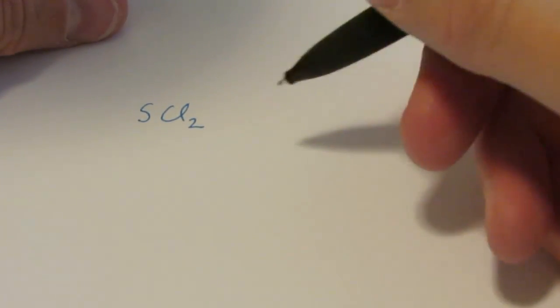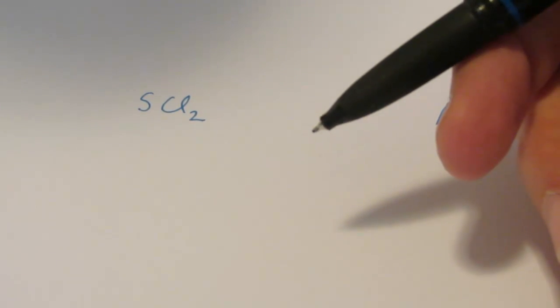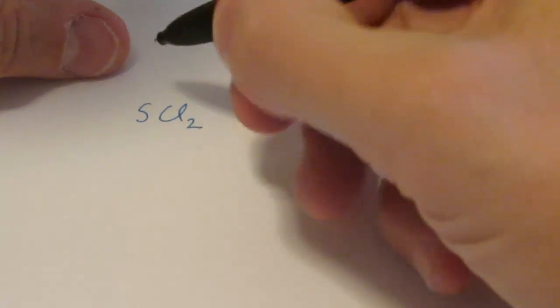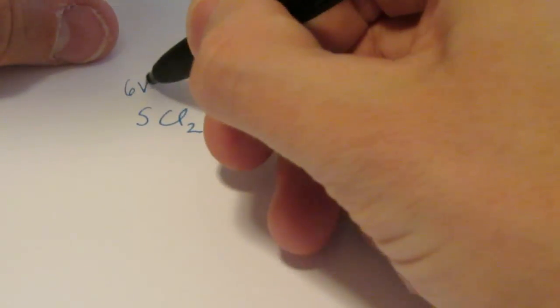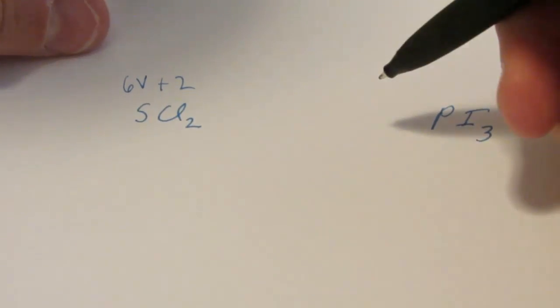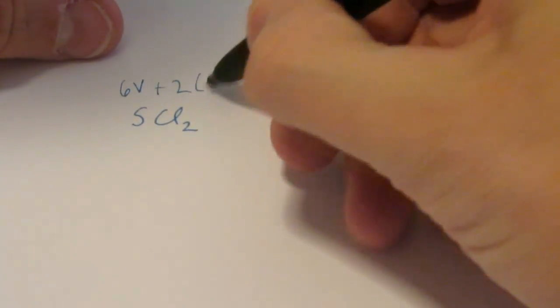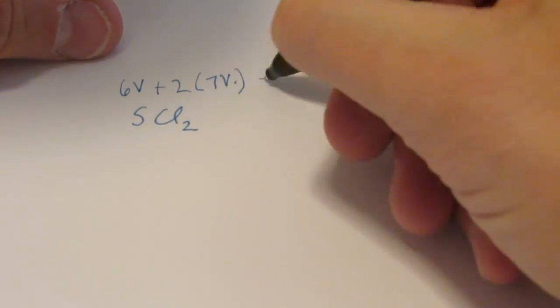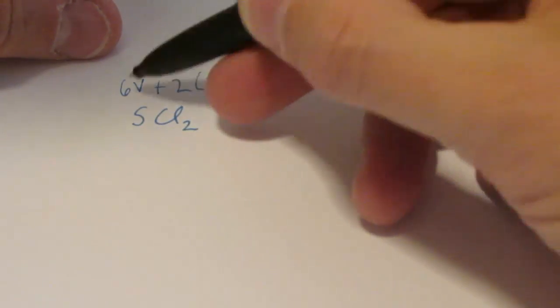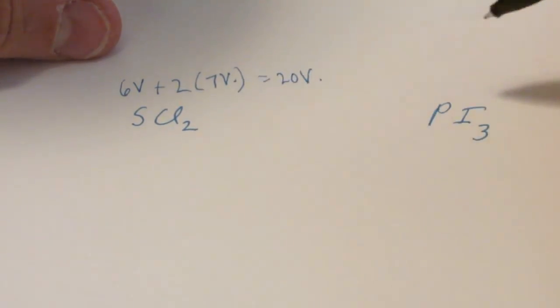Remember to draw a Lewis structure, let's start by finding the number of valence electrons that we have to deal with here. Sulfur is in group 16, so it has 6 valence electrons. Each chlorine is in group 17, 7 valence electrons a piece. So I have 14 plus 6, 20 valence to work with.